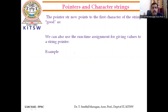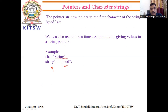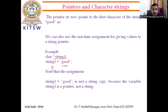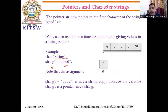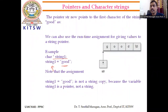You can also use runtime assignment. For example, we can declare a character pointer and then assign a string to that pointer at runtime. This is the same as creating a pointer pointing to a particular string. But remember: 'string1 = "good"' is not a string copy — it does not copy the content. We are assigning the pointer to point to a particular string. The string 'good' is stored ending with a null character, and when we create 'str' as a pointer, it points to the first character of where that string is stored in the memory location.